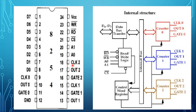Pin number 17 is output of counter 2. Pin number 18 is clock input of counter 2. Pin numbers 19 and 20 are A1 and A0, which are address pins used to select one of the three counters or the control word register for read and write operation. Normally they are connected to the system address bus.